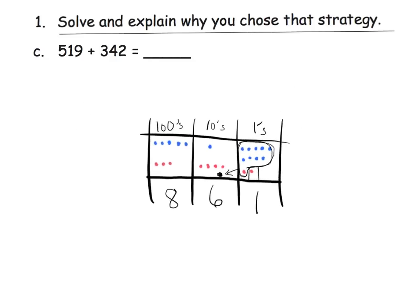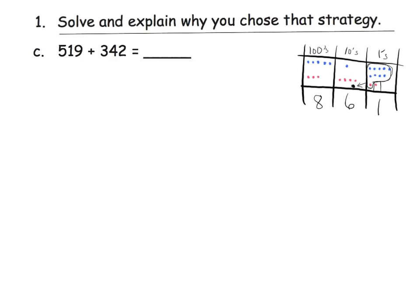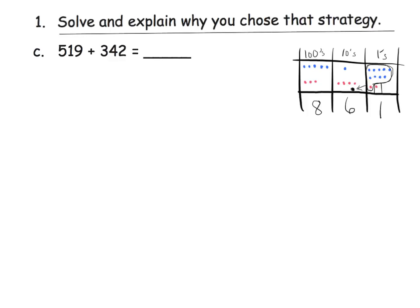Now, if we want, let's put that away, and another way we can do it is we could use the vertical method. So the vertical method would be 519 plus 342, there's our standard algorithm, and notice I lined up our columns nice and neat.